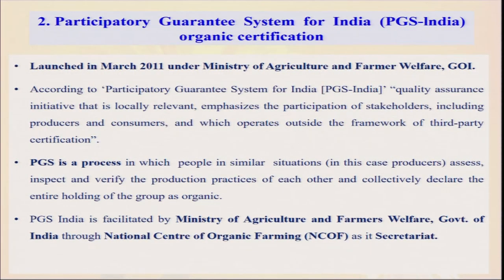Whenever the intention is to sell produce in the international market, only the NPOP standard certification — the third-party certification — applies. For this third-party certification, inspection is an integral part of the certification process. Converting a farm to organic requires time: farmers who have been growing inorganically and now want to convert may experience yield reduction in the initial 3 to 4 years, but once soil fertility is enhanced and nutrient levels are optimal, yields will recover to levels comparable to inorganic conditions.